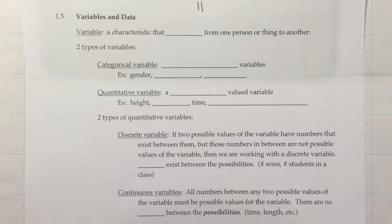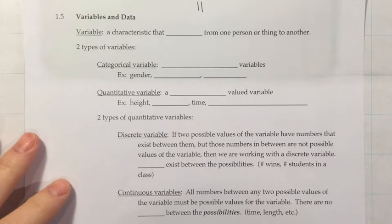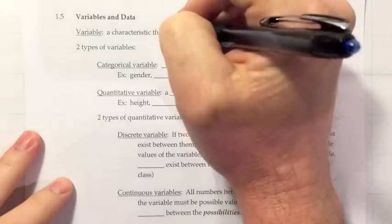Section 1.5, Variables and Data. Alright, so we're going to define a new term, a variable, and that is a characteristic that varies from one person or thing to another.